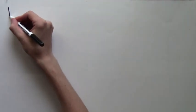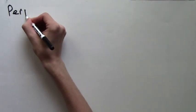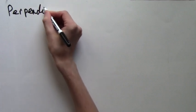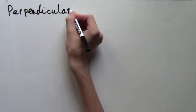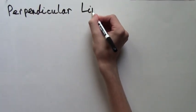In this video lesson, we will learn how to find the equation for a line that is perpendicular to a given line and that passes through a given point.